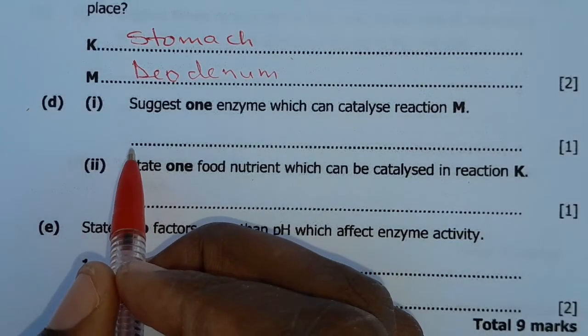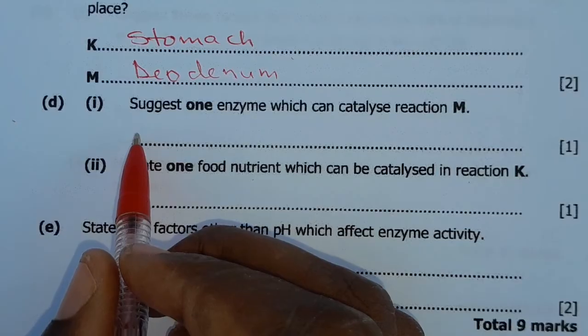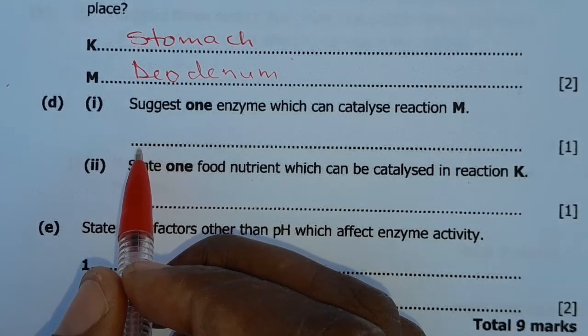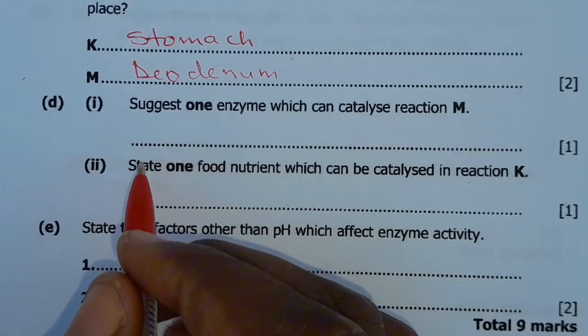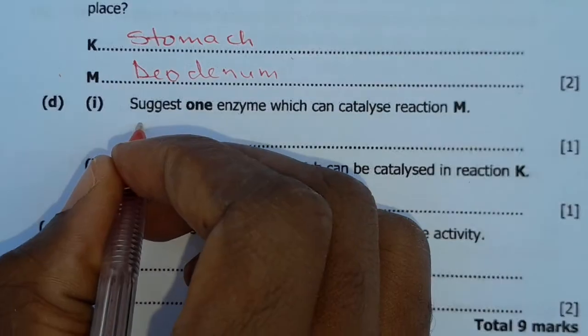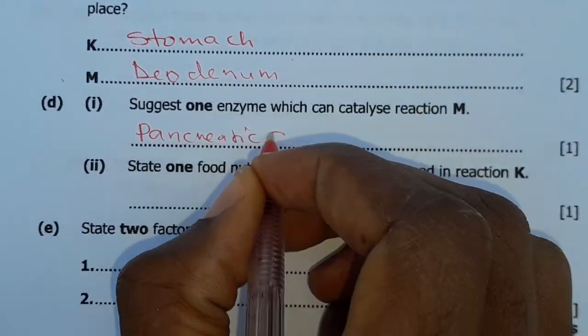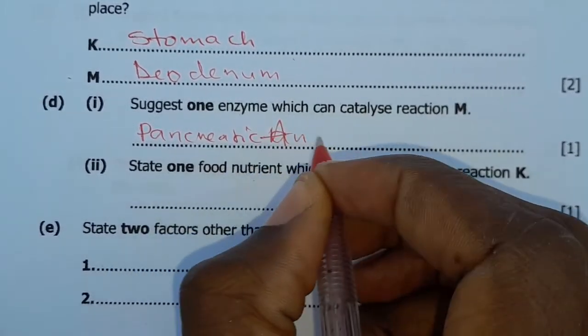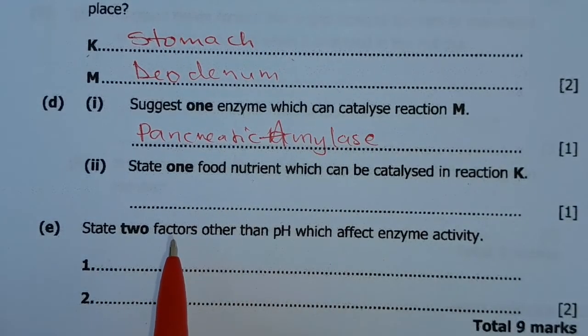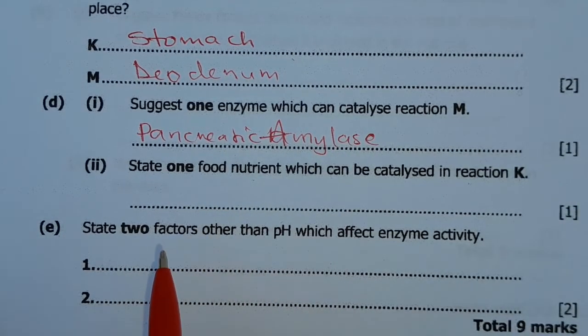So there are a lot of enzymes that act in the alkaline condition that is in the duodenum. But here we are only going to answer, to write one. One of them is pancreatic amylase. Pancreatic amylase that converts starch to maltose.